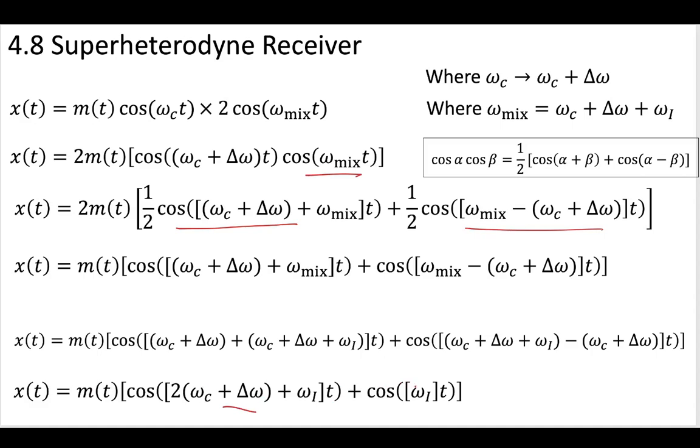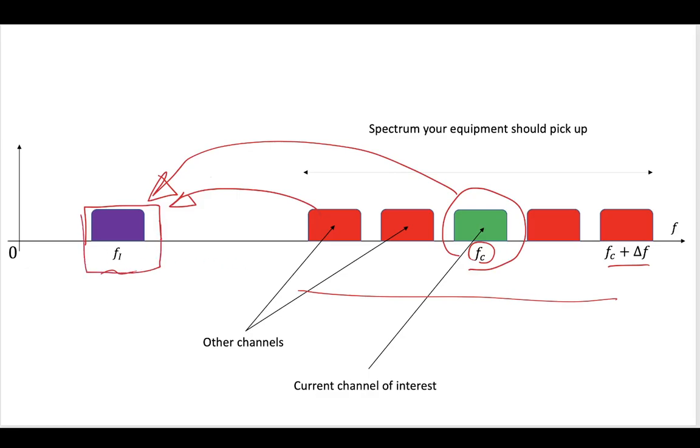And just like we saw in those previous videos, we can put that through a bandpass filter and get a message that is modulated with just some intermediate frequency. And that intermediate frequency can be down here.